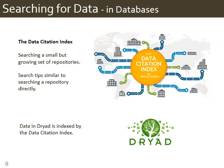A third way to search for data is in databases. You may know Web of Science as a literature database. The same company also has a database of data sets called the Data Citation Index. Just like in Web of Science, when you find a citation in the Data Citation Index, you click on the title and it takes you to the data set itself, inside the data repository where it lives. Data in Dryad is indexed here, along with data from other repositories. Unlike Re3Data, searches in the Data Citation Index are searching inside the repositories at the level of the descriptions of the individual data sets, instead of just searching the descriptions of the larger repositories.